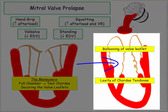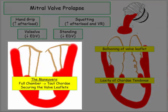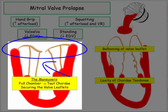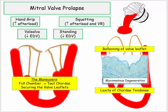On the right, you can see a depiction of chordae appearing lax, which permits those degenerative valve leaflets to more easily balloon or prolapse. Focusing on the left graphic, we see a full chamber depicting tension on the chordae, thereby anchoring or securing the leaflets in place. This depiction gives you a functional understanding of how the maneuvers mitigate the auscultatory findings. Although I am highlighting the chordae, recall the underlying pathology is myxomatous degeneration — let's not confuse the two.